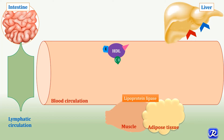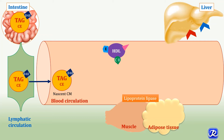Chylomicron metabolism starts in the intestinal cell with the formation of chylomicrons. This occurs in the endoplasmic reticulum of intestinal cells, where triacylglycerol and cholesterol are packaged into chylomicrons. The chylomicron formed in the intestine is associated with ApoB48 and ApoA1. It is then secreted into the lymphatic system, and through the thoracic duct it is delivered to the circulation as nascent chylomicron. In the circulation, it acquires ApoE and ApoC2 from circulating HDL and becomes a mature chylomicron.